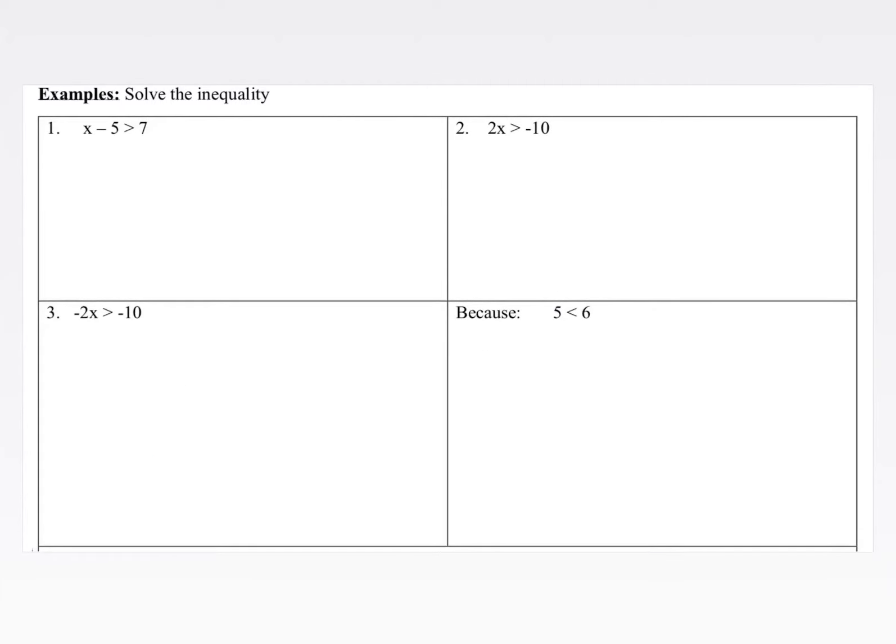Our instructions are to solve the inequality, and I'm also going to have us graph just for extra practice. Number 1, first we're going to practice reading the inequality. This reads x minus 5 is greater than 7. Our goal, just like solving equations, is to isolate that variable. In this case, it's x.